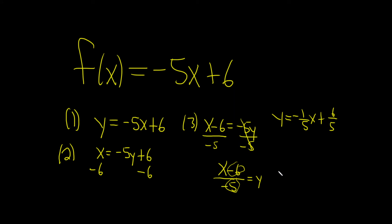Right, just rewriting it. So our final answer must be written in the correct notation. So the correct notation for the inverse is f inverse of x equals negative 1/5 x plus 6 over 5.